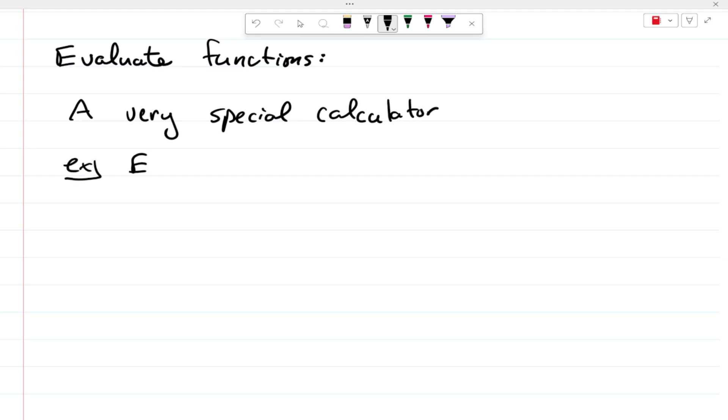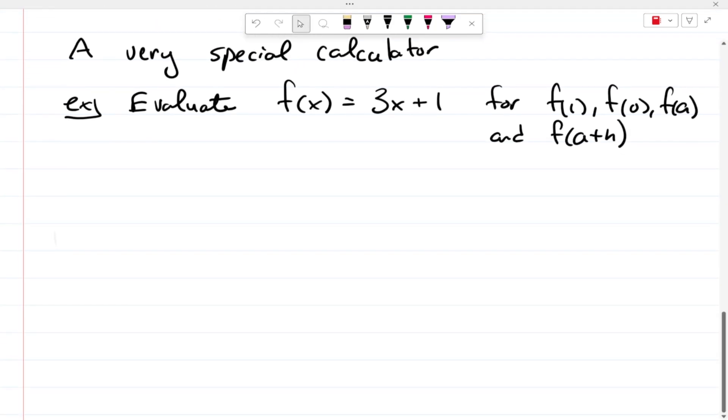So, the example is evaluate f of x equals 3x plus 1 for f of 1, f of 0, f of 3, and actually, let's do, instead of f of 3, let's do f of a and f of a plus h.